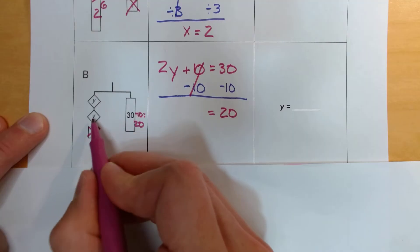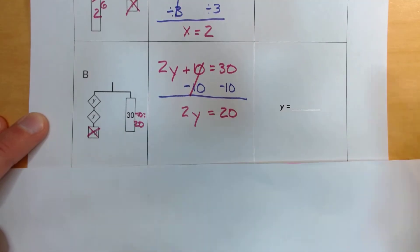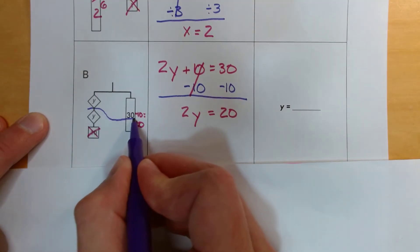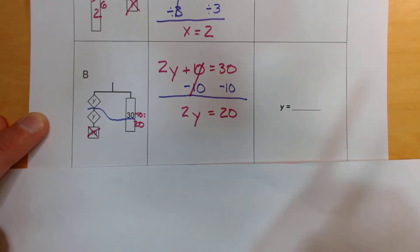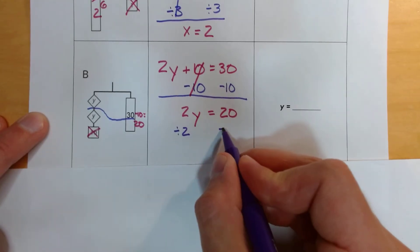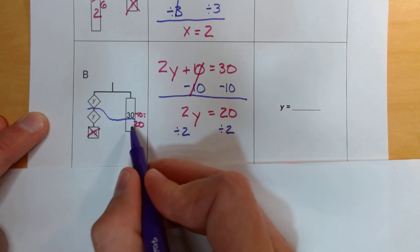But what does 1y equal? So what I have to do is I have to split these y's into two groups, which means I also have to split this 20 into two groups. Now, again, we think of the word split, we think of division. Divide by 2. Divide by 2. Again, we're doing it to both sides to keep our equation balanced and to figure out what one group of y equals.